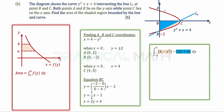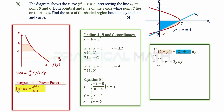Taking the curve equation minus the straight line equation and simplifying — the 4 and -4 cancel — gives the integral of (-y² - 2y) dy from -2 to 0. Using the power rule (integrate xⁿ → x^(n+1)/(n+1)), the result is [-y³/3 - y²] from -2 to 0. Substituting the upper limit 0 minus substituting the lower limit -2 gives the definite integral result.